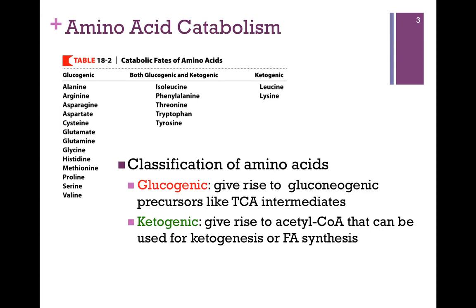In this table from your book at the top of our screen, we have the catabolic fates of amino acids. On the far left, you can see that many of our amino acids give rise to products that are just glucogenic. On the far right, only leucine and lysine are only ketogenic. And some, in our central column, give rise to products that are both glucogenic and ketogenic.